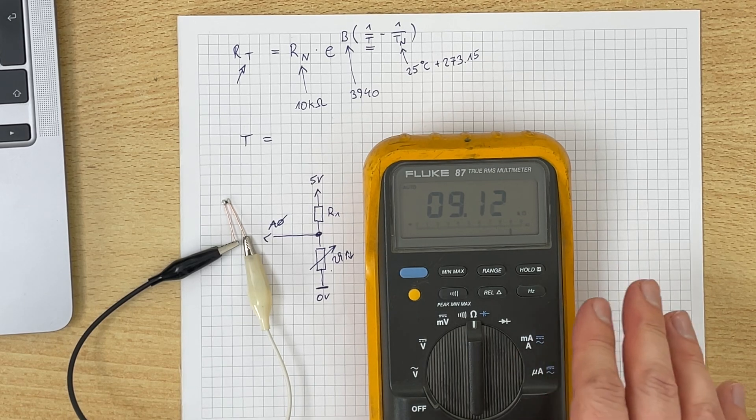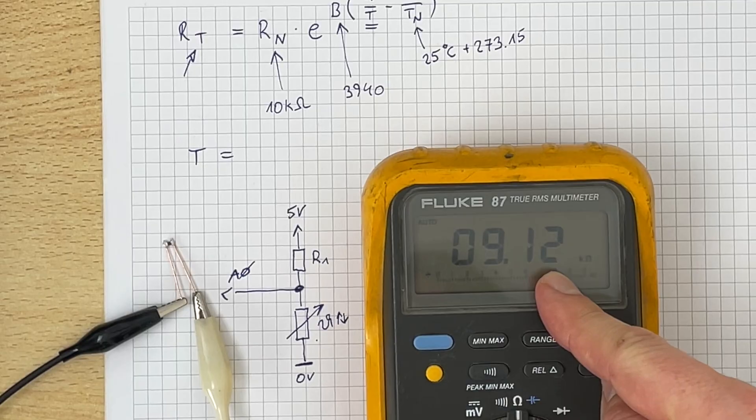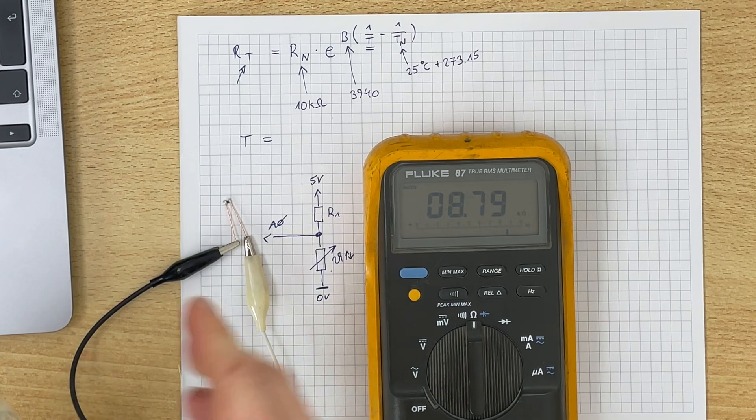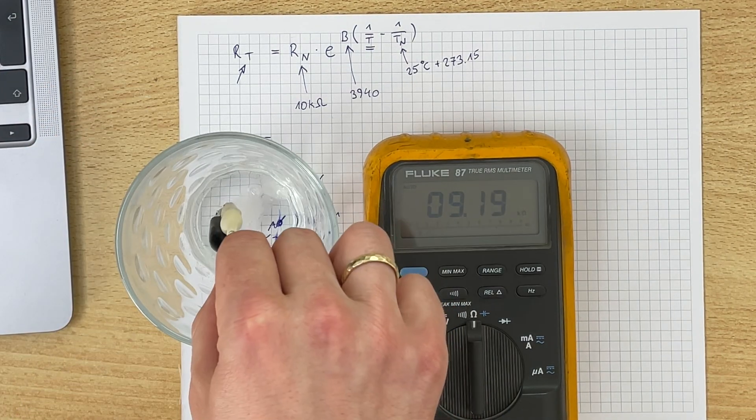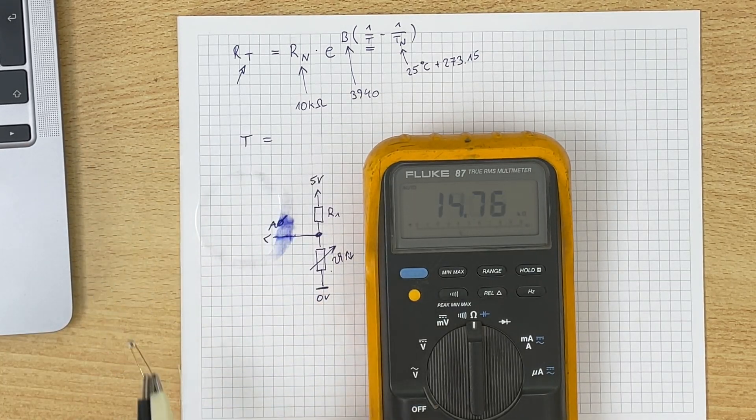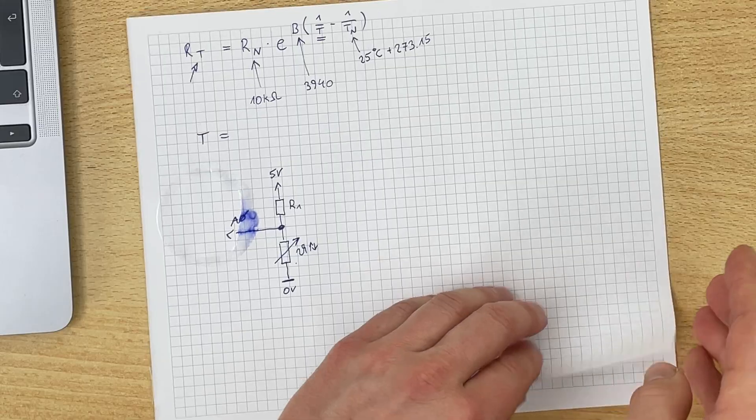And we can check this with a multimeter. So right now the NTC sits at room temperature and has 9.12 kilohms, so it's slightly warmer than 25 degrees. But if I put it into a cup of ice water, then the resistance will go up. Now a good rule of thumb is that your fixed resistor should have around the same resistance as the NTC exactly at the point where you would like to operate in. So in my case, the temperature point of operation should be 25 degrees, and so I will stick to 10k because this is exactly the NTC's resistance at 25 degrees.